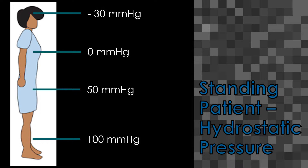Hydrostatic pressure has to do with how far from the heart the area being measured is — closer to the heart is less pressure, further is more. Also remember that above the heart is negative pressure and below the heart is positive pressure. In the standing position, the head is negative 30 millimeters of mercury of hydrostatic pressure, the heart is zero, the waist could be about 50 millimeters of mercury, and the ankles are 100 millimeters of mercury of hydrostatic pressure.